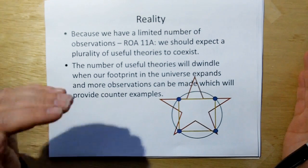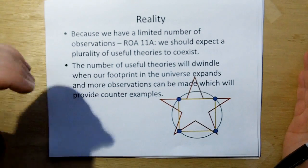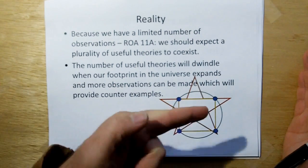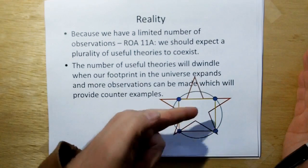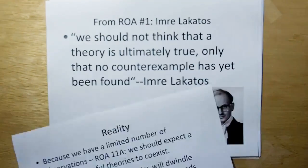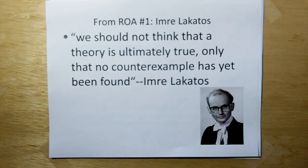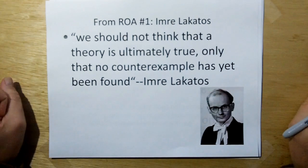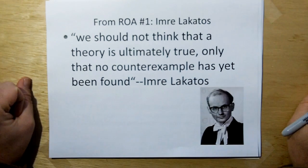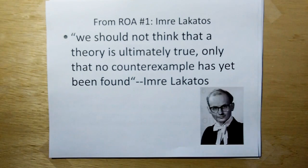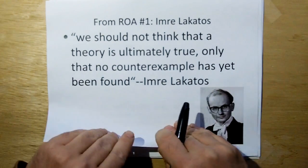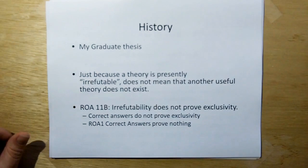We are not advanced in science enough to be able to say any of that for sure. The only thing that matters, the only way you can prove a theory to be a bad theory is to find a point where they do not agree with observation. And we should not think that a theory is ultimately true, only that no counterexample has yet been found because we haven't expanded our footprint in the universe to find the counterexamples yet.